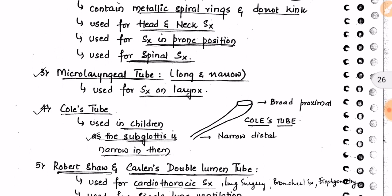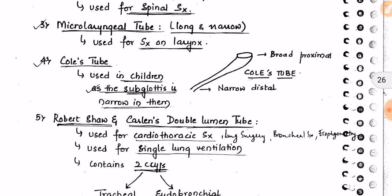Third, the microlaryngeal tube — it is long and narrow and is used for surgery on the larynx. Fourth, Cole's tube has a broad proximal end and a narrow distal part. Cole's tube is used in children because the subglottis is narrow in them, so a narrow distal end is needed.